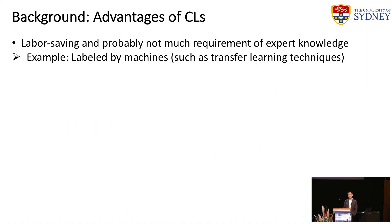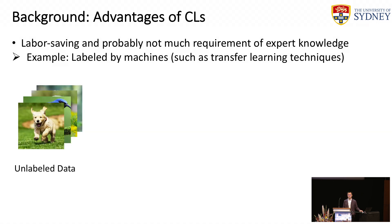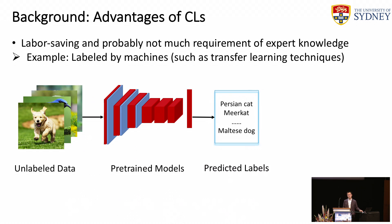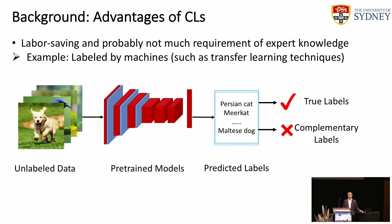There are many advantages of complementary labels. The first one is that labeling complementary labels is labor-saving and probably does not require too much expert knowledge. Here is an example: we can assign complementary labels by machine using techniques such as transfer learning. Given a large set of unlabeled data, we use a pre-trained model to predict the labels. After obtaining the predicted labels, a simple judgment can verify whether a label is a true label or a complementary label — if a label is correct, it is the true label; if incorrect, it is a complementary label.